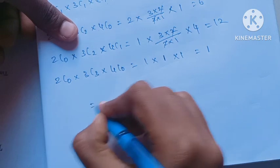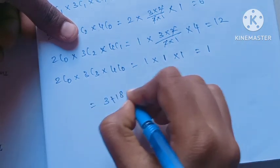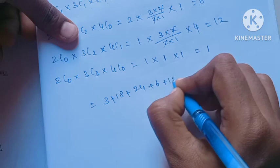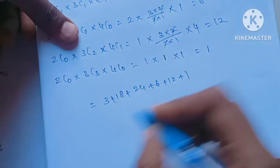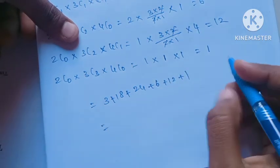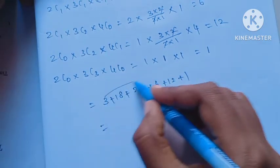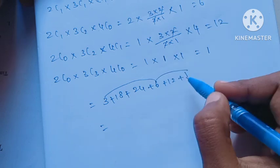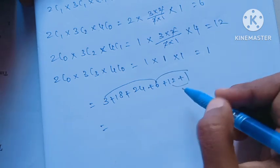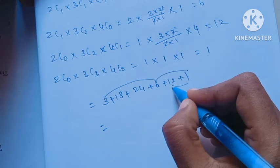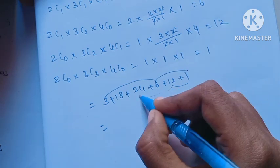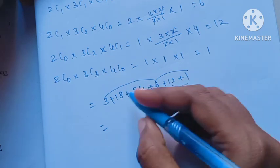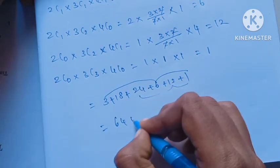The values work out as: 3, 18, 24, 6, 12 plus 1, 9, 10 — adding these: 22, then 22 plus 46 gives 46, and 46 plus 18 equals 64. So the final answer is 64.